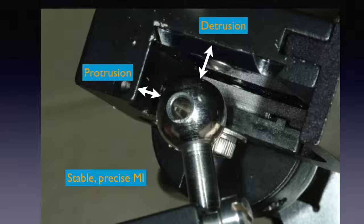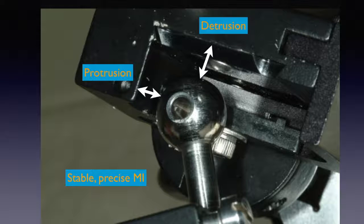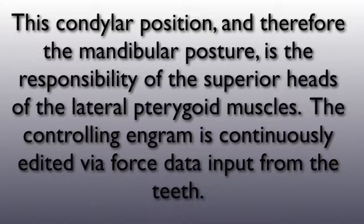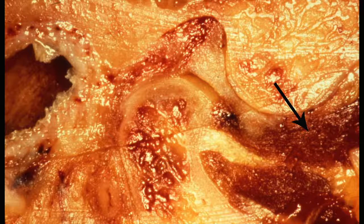Here we see the condylar position requirements of MI for this particular patient. The casts were mounted to centric relation, and then the casts were placed in maximum intercuspation, thus demonstrating where the condyle in this joint has to be for the patient's teeth to fit together precisely. Her occlusion requires some protrusion of the mandible and quite a bit of detrusion of the mandible. This condylar position, and therefore the mandibular posture, is the responsibility of the superior heads of the lateral pterygoid muscles, which fire on closure.